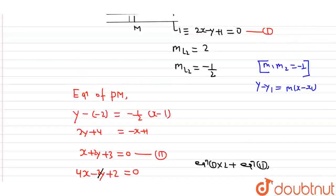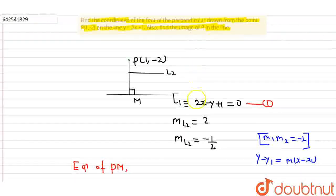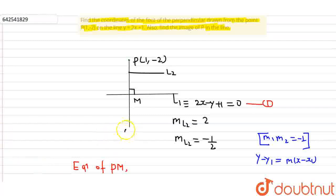Now we need to find the image of point P with respect to the given line 2X - Y + 1 = 0. The image of point P is point Q. We need to find the coordinates of point Q. Since M is the midpoint of P and Q, and the coordinate of M is (-1, -1).